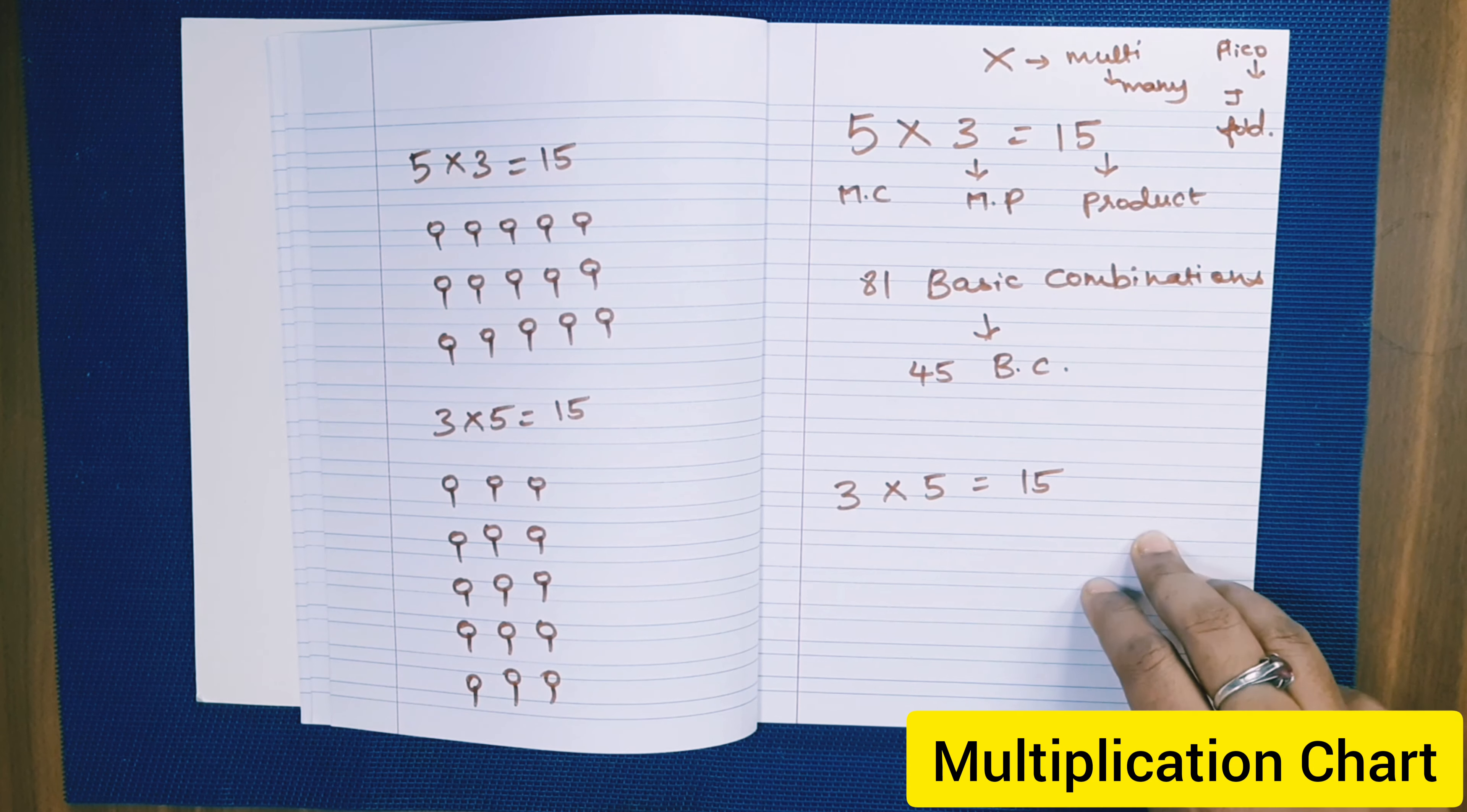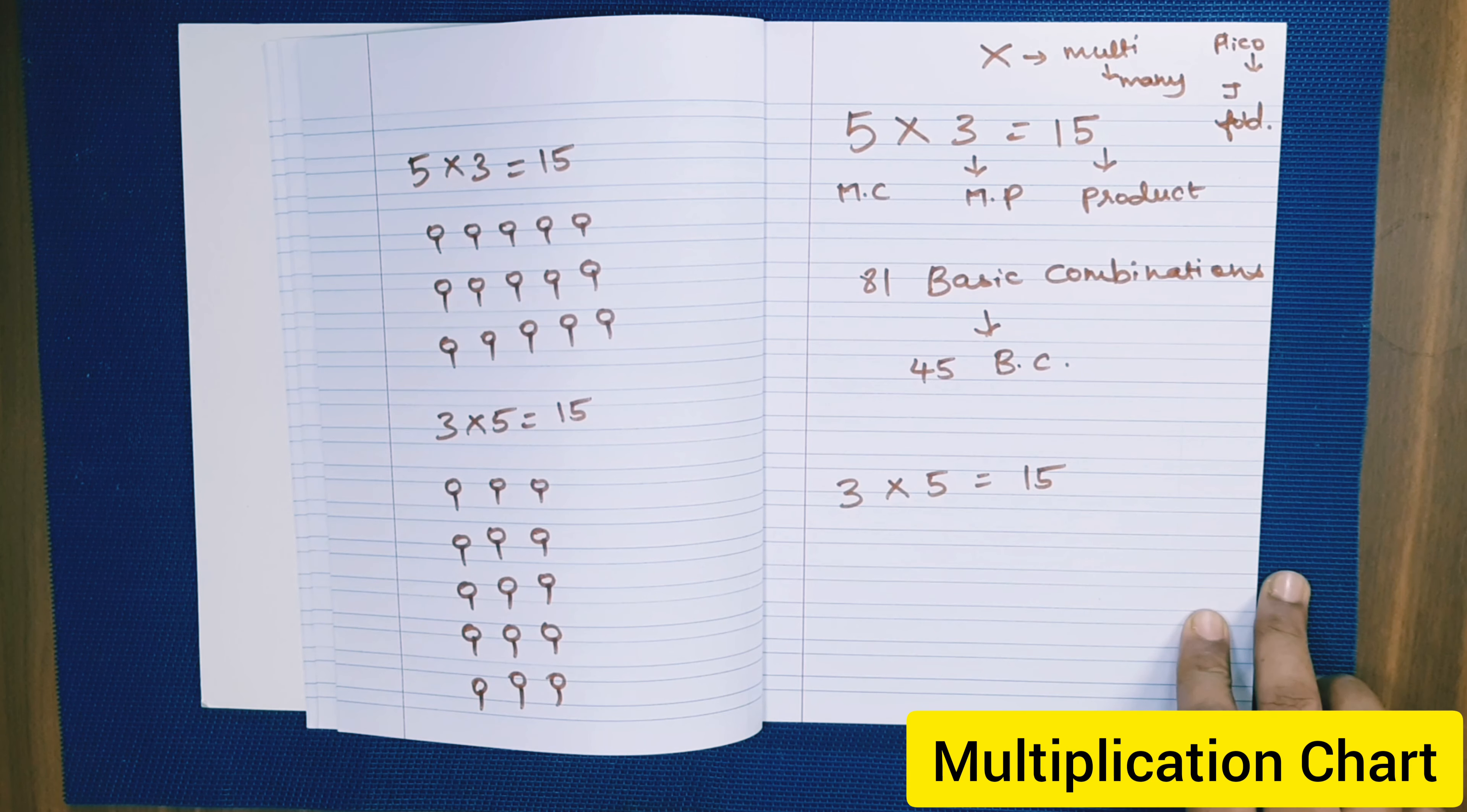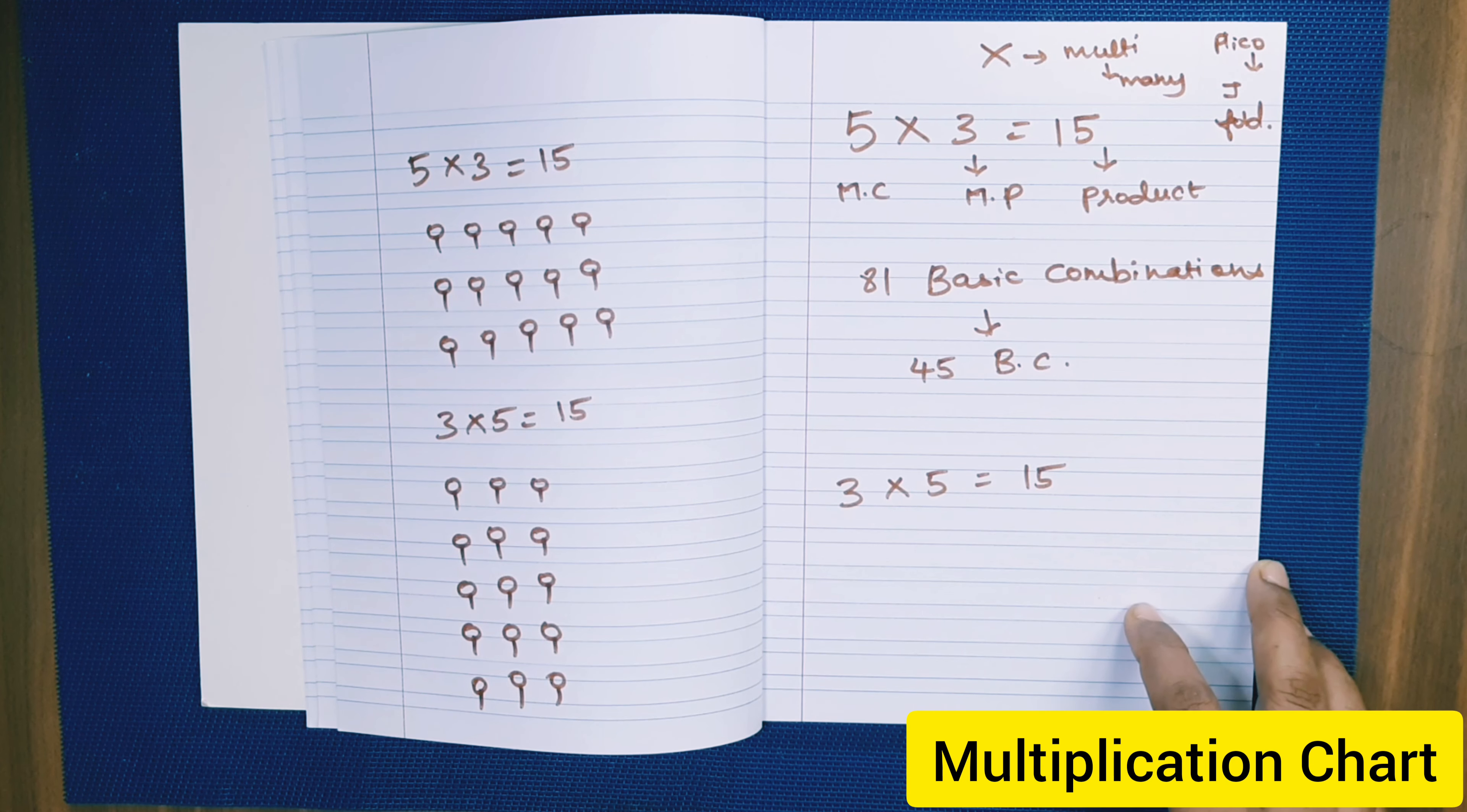Many children are finding it difficult to memorize the results of basic combinations. For example, 5 multiplied by 3, 6 multiplied by 5. So we have something called a multiplication full chart.